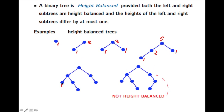Here we have depths one, one, two, three, and here one, two, and four — so the differences are only one. But if we go and add this one node, so now we have depths one, two, three, then at this moment we don't have a height-balanced tree, because on the right-hand side we have a tree of height two and here of height zero. There's a gap of two, and that is too much.